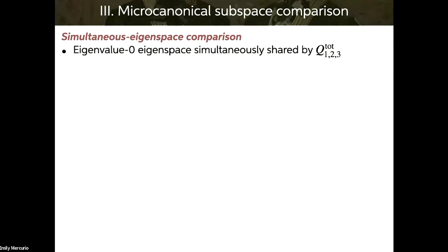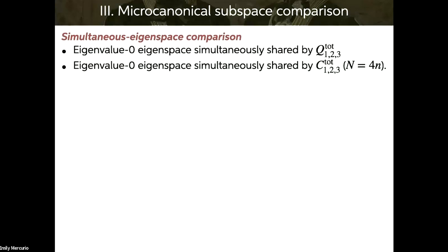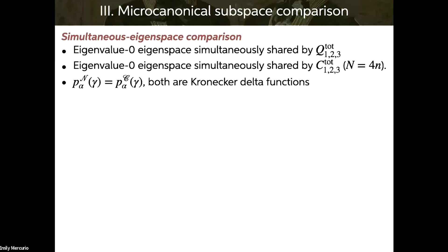Our first comparison is in a micro-canonical subspace. You might wonder: how can non-commuting charges share an eigenspace? There is one special case — the simultaneous eigenspace where you have the zero eigenvalues of the non-commuting charges. An intuition: if the total angular momentum is zero, then each component will be zero. We go to the commuting model and set the eigenvalues there to all equal zero as well. This introduces a restriction that the number of sites must be a multiple of four. Both probability distributions are just delta functions at gamma equals (0,0,0).